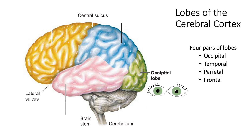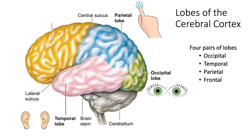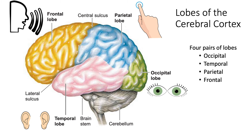Next, we have the temporal lobe, which houses the auditory cortex — named for its location near the temples. Following that is the parietal lobe — parietal meaning 'wall' — sitting as a wall between the occipital and frontal lobes. The parietal lobes are responsible for reception and perception of somatosensory input. Finally, we have the frontal lobes, responsible for voluntary motor movement as well as higher functions such as speaking and general thought.